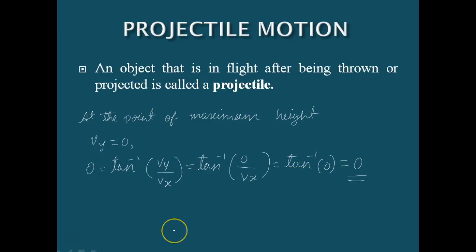So now we understand what projectile motion is and how it is represented using components in the horizontal and vertical directions. The acceleration along the horizontal direction is 0, and along the vertical direction it is the acceleration due to gravity.